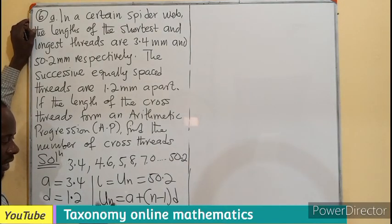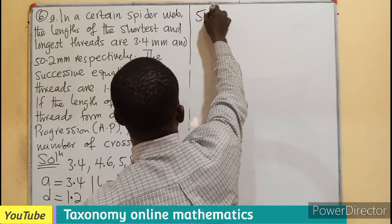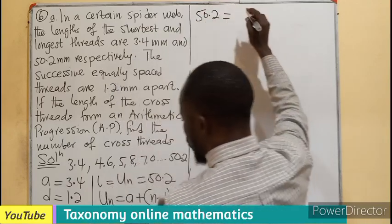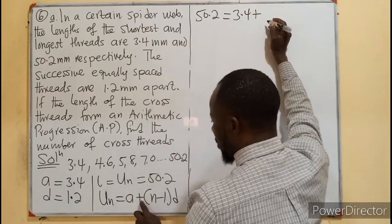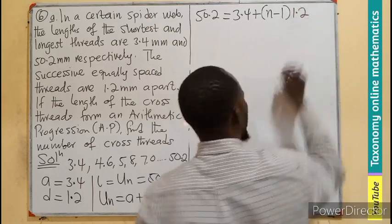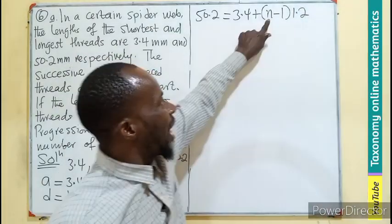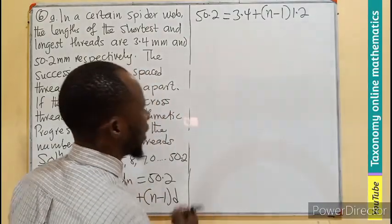By substitution, 50.2 equals a, which will be 3.4, then we have n minus 1, 1.2. What are we looking for? We are looking for n, the number of threads in between. So let's expand.